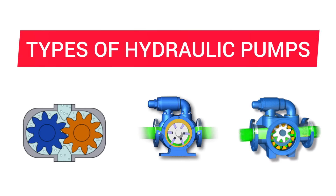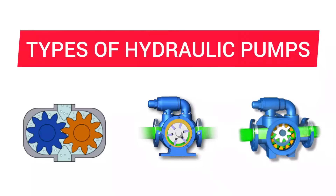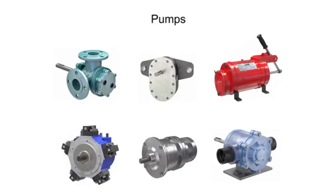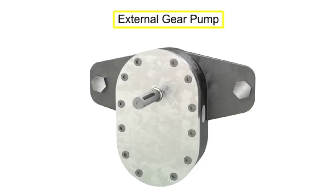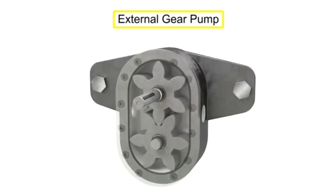Many different types of pumps exist to assist fluid movement in a variety of systems. An external gear pump uses two gears rotating against each other to provide fluid movement.